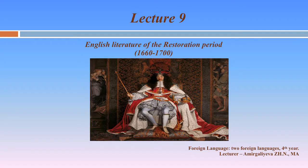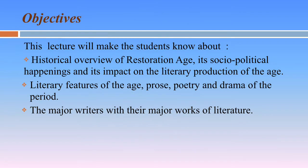Lecture 9 of the subject English Literature is devoted to the theme English Literature of the Restoration Period. This lecture will make the students know about the historical overview of the Restoration Age, its socio-political happenings and its impact on the literary production of the Age, literary features of the Age, prose, poetry and drama of the period, and the major writers with their major works of literature.